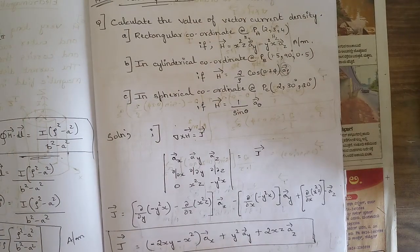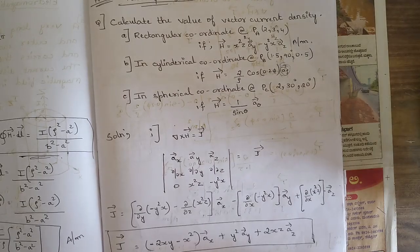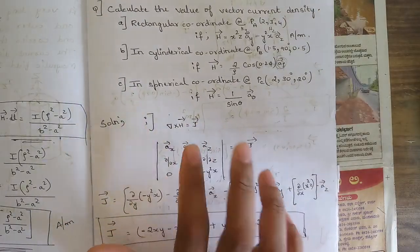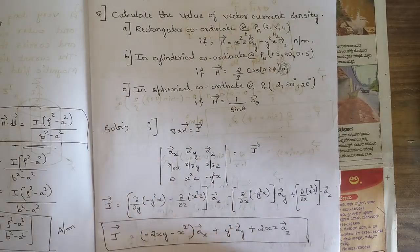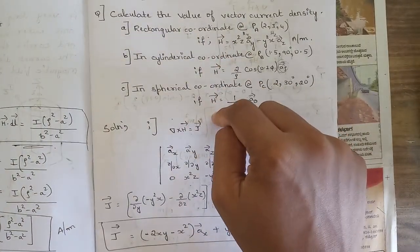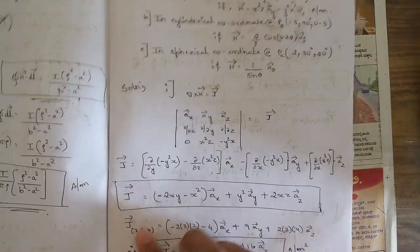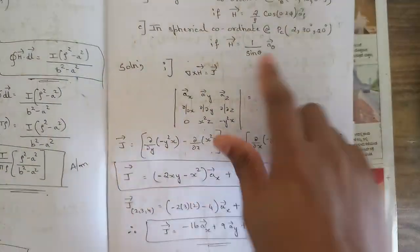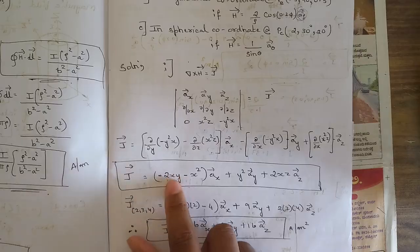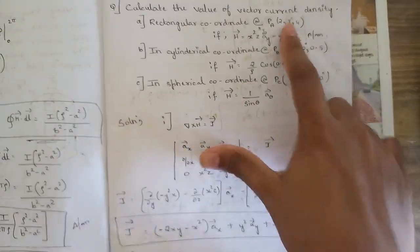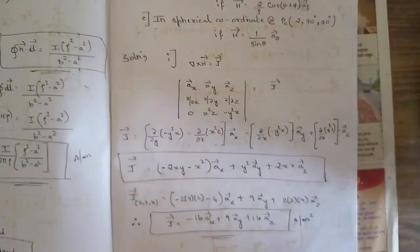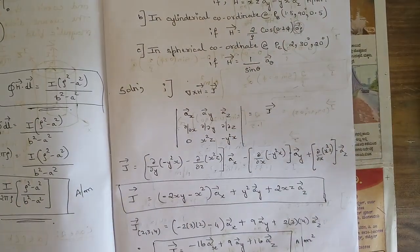From module 4, an important problem I missed: problems related to Ampere's law using the relation del × H = J. Same approach as divergence — they give three sub-questions with values of H in three different coordinate systems. Use del × H = J, solve for current density J, substitute the given coefficient values at the specified point, and find the values of J in all three coordinate systems. This problem is very very important.